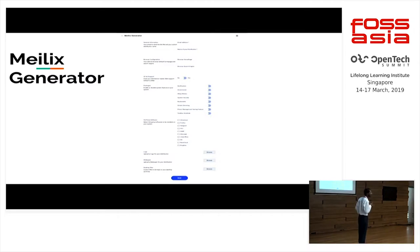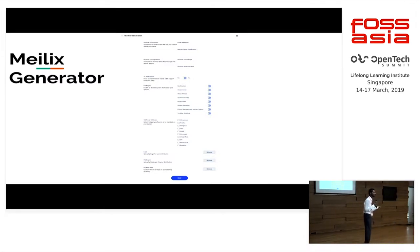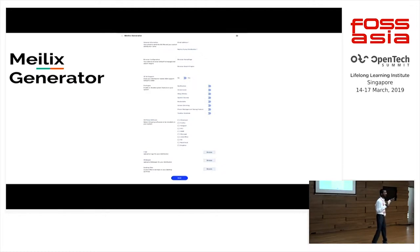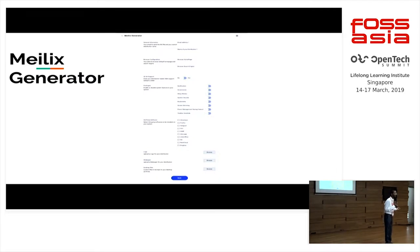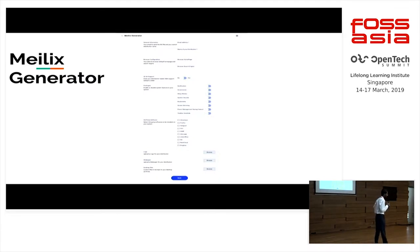There is a desktop file section where you can upload a zip file or a bunch of files that will be present on the desktop. Click the build button, wait for 10 minutes, and you will get a link on your email with an ISO. Then you can run it in a VM or live boot it, and you will see all those features you created present in the operating system.